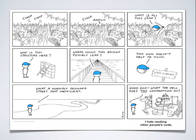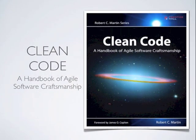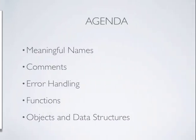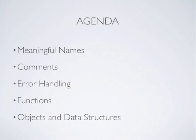We know that features will be added, bugs will be fixed, tweaks will be made during the lifespan of this application. So how can we make our code more readable and more understandable? That's where this book comes in — Clean Code by Robert C. Martin, or as he's known in the industry, Uncle Bob. What this book presents in a very language-agnostic way is a set of guidelines and techniques to help us write cleaner, more understandable, more readable, and more maintainable code. We'll be going over five core fundamental areas.